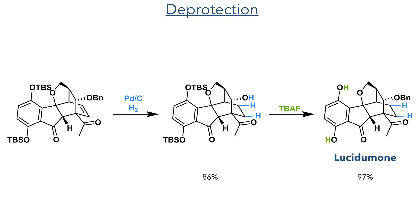With this in hand, simple deprotection of the TBS groups using TBAF furnished lucidamone in a 97% yield.